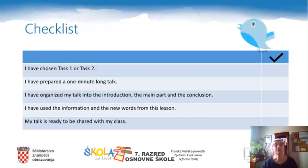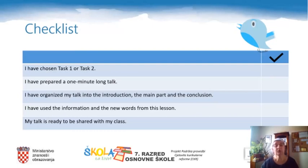Here's the checklist that will help you. Check that you have chosen either task one or task two. Have you prepared your one-minute talk? Have you organized your talk into the introduction, the main part, and the conclusion? Have you used information from this lesson? And is your talk ready to be shared with your teacher and classmates?